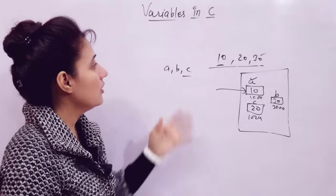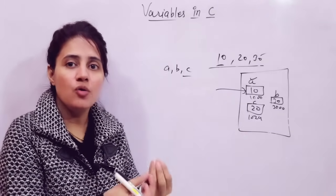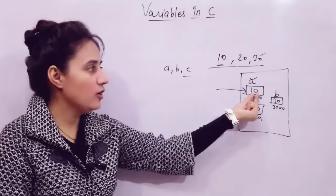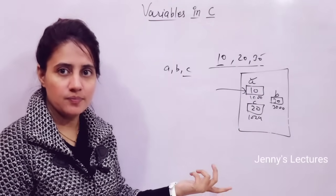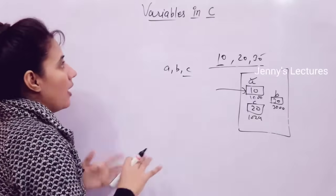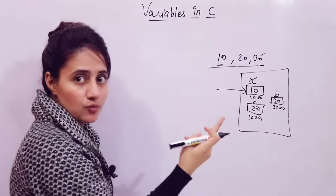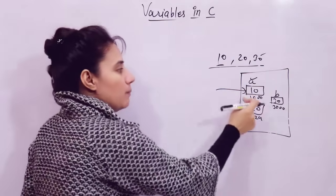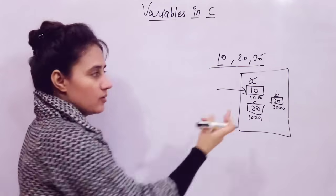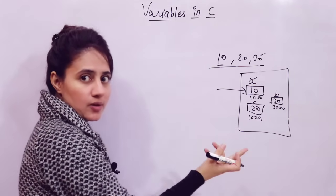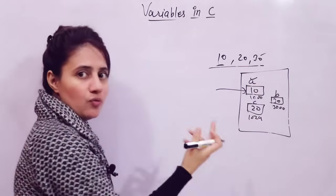A variable is a name or a data name that is used to store a value of data. Here I am storing value 10 and the name is A — this is the variable. You can also say a variable is a name given to a memory location where we store a value or any constant. I am naming this memory location A and storing here the value of a constant.